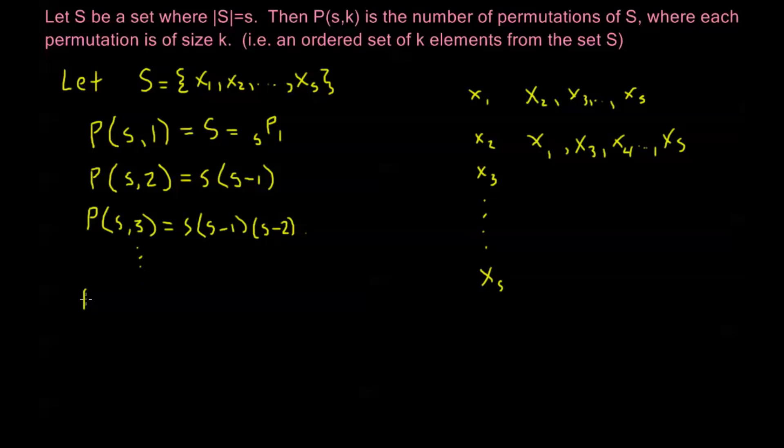Now in general, if we have P(s,k), where k is less than s, or actually even if k is equal to s, this is going to be s times s minus 1 times s minus 2, all the way to s minus k plus 1. That's what we saw here when it was s₃, I went all the way to s minus 2. So if it's sₖ, I'm going to go all the way to s minus k plus 1, and it's just going to be this product of all of these integers.